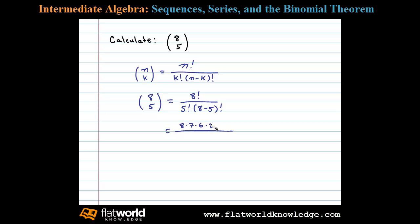Here we're dividing by 5 factorial times 8 minus 5 factorial, or 3 factorial. Now at this point you can see 5 factorial in the numerator and denominator, so they cancel.